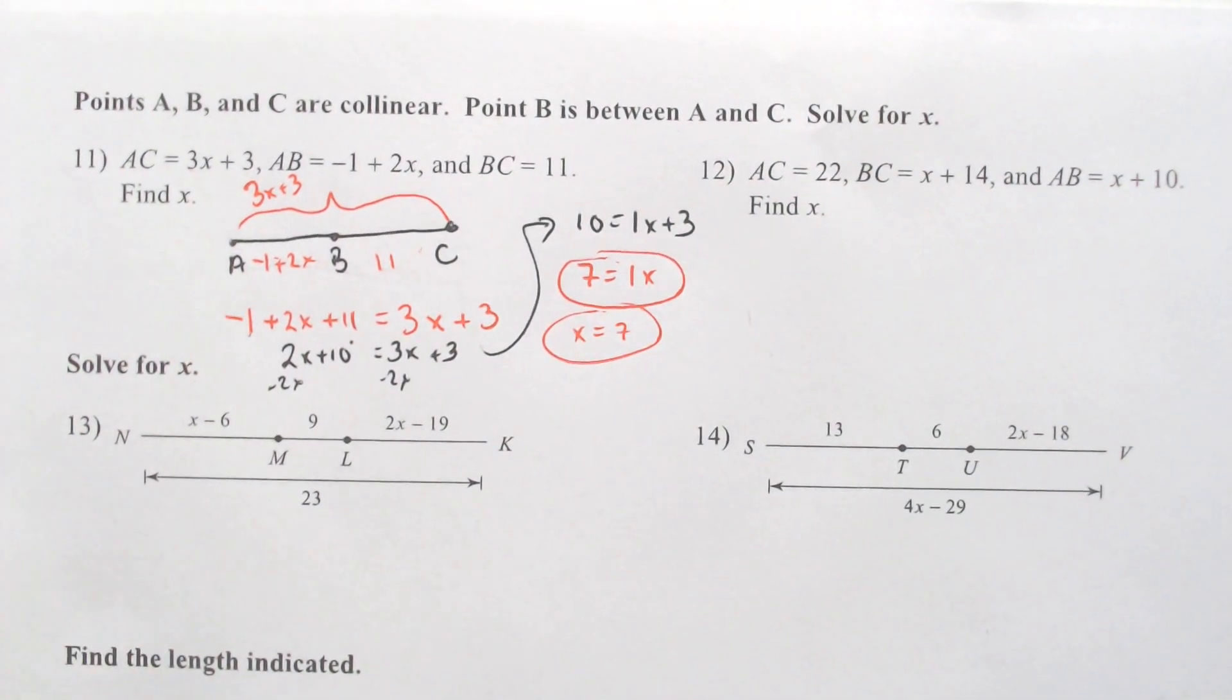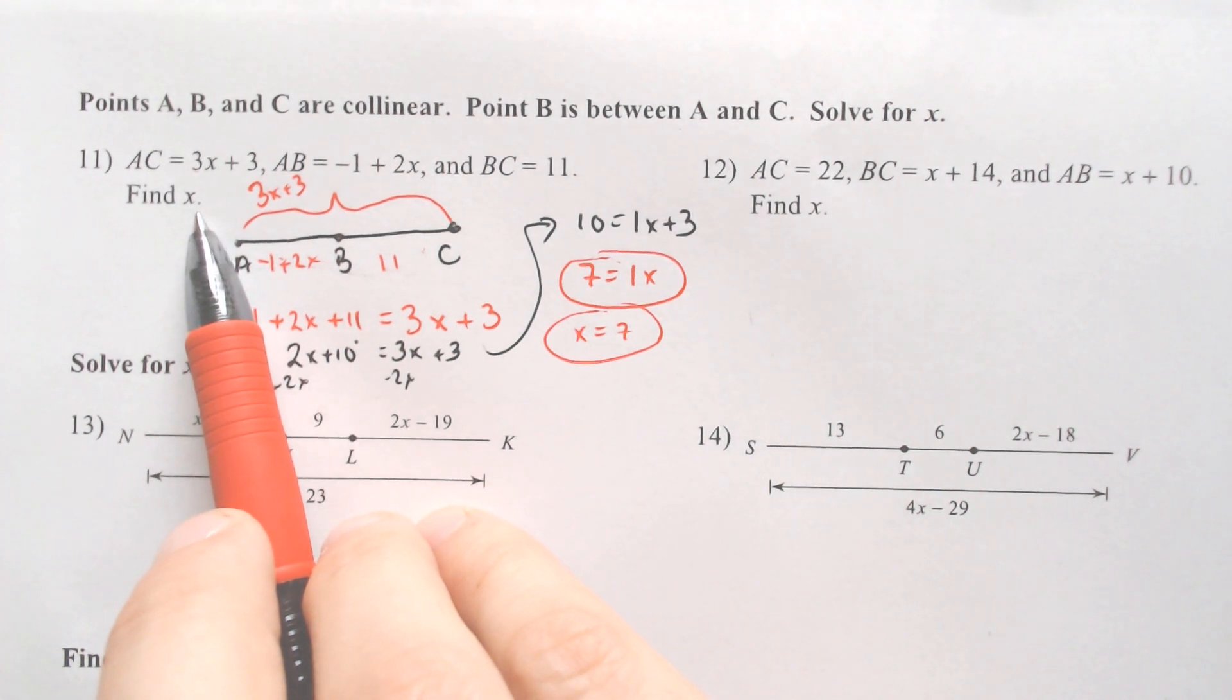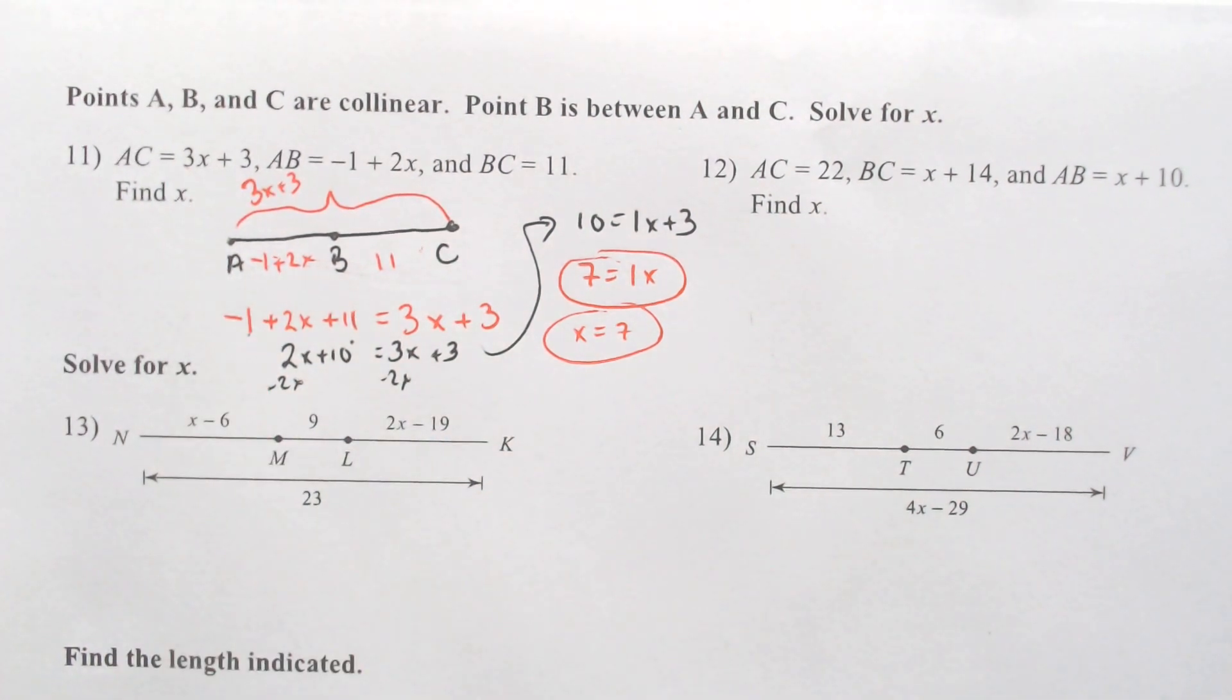Subtract the 3 and you get 7 equals 1X, which means X equals 7. Always double check with geometry to make sure they don't just want you to find X, but they actually want you to maybe plug in for something else. But in this case, they just want X.